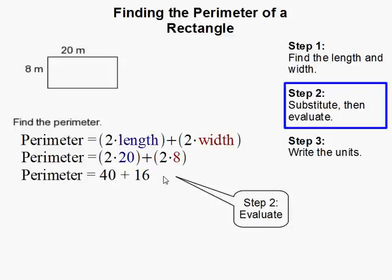Then all we have to do is evaluate. 2 times 20 becomes 40, 2 times 8 becomes 16, and we add those up to get 56.